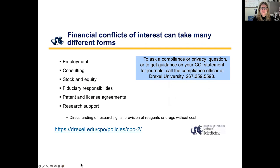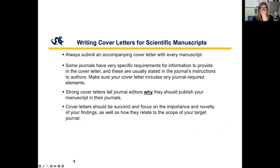For your conflict of interest statement, important things to include are employment, consulting, stock and equity, fiduciary responsibilities, patent and license agreements, research support, and how the work was funded — including the funding agencies for transparency. Our Drexel University compliance office was really helpful in walking me through all of my potential conflicts of interest and how to properly disclose them.